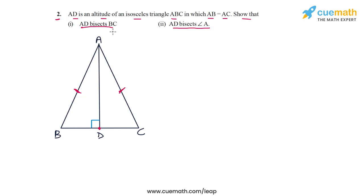Think about this carefully — what this question really asks us to prove is that because AD bisects BC, it is also a median of the triangle, and because AD bisects angle A, it is also an angle bisector. So the outcome is: if you have an isosceles triangle and draw the altitude from the vertex to the base, it is also a median and an angle bisector.